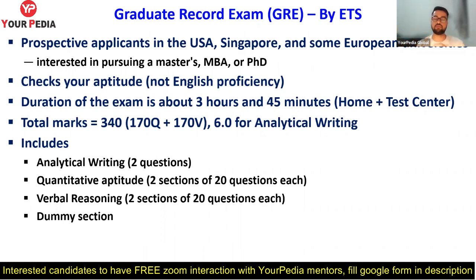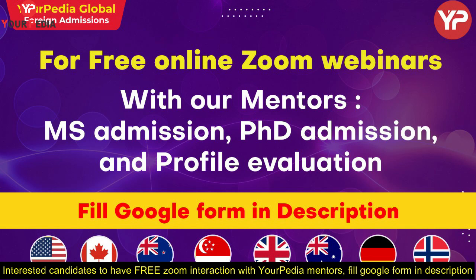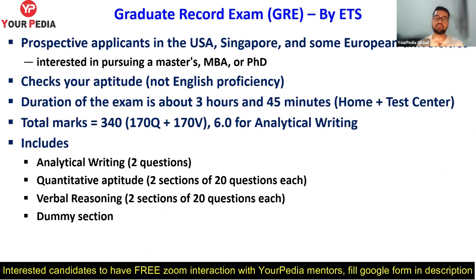The total marks for this exam is 340. Out of that, 170 is for quantitative aptitude, which is mathematics, and 170 is for verbal reasoning, which is essentially English. There is also a third section called analytical writing, whose score is not included in the 340. You will get a separate score out of six for that. Most universities consider only the 340 total marks score and generally don't consider the analytical writing portion.